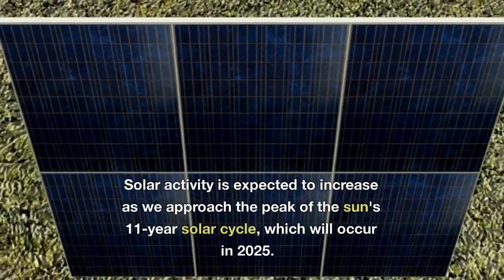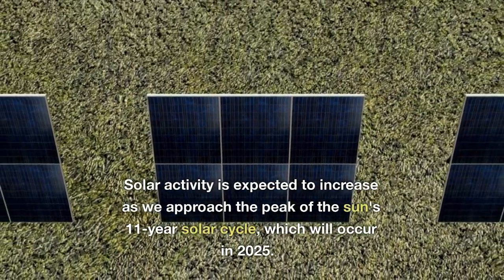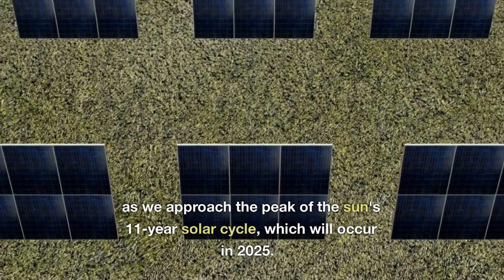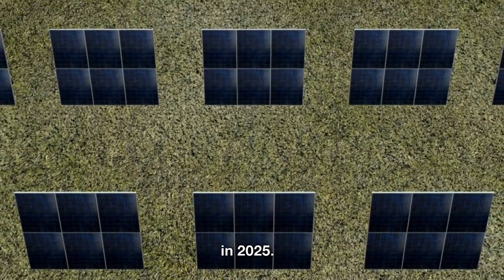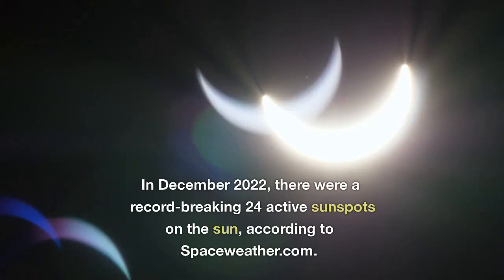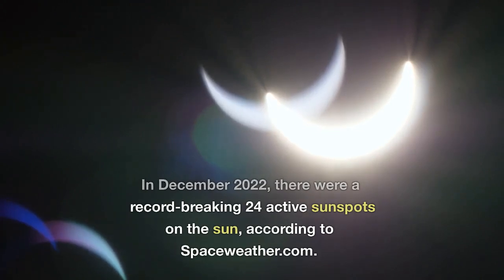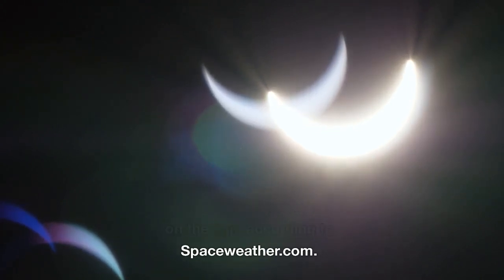Solar activity is expected to increase as we approach the peak of the Sun's 11-year solar cycle, which will occur in 2025. In December 2022, there were a record-breaking 24 active sunspots on the Sun, according to SpaceWeather.com.